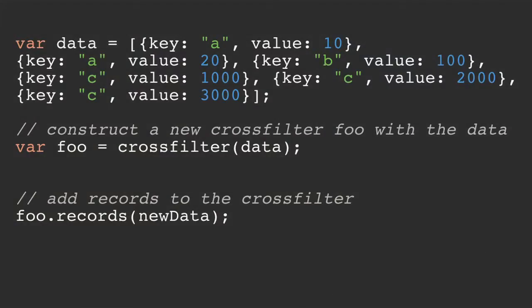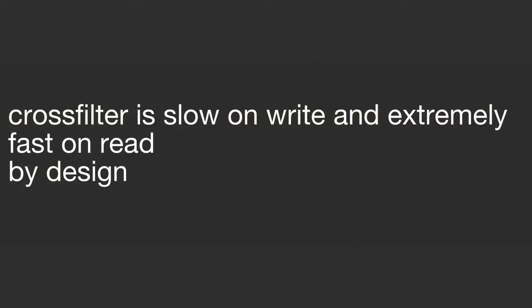So you want to learn about Crossfilter? It's very simple. You have some data, so you give Crossfilter some data — that's the first step. If you have new records, give it some more data. A thing to note: Crossfilter is intentionally slow on write and extremely fast on read. This is by design. Crossfilter is intended for fast querying, but not intended to have a stream of data being thrown into it.